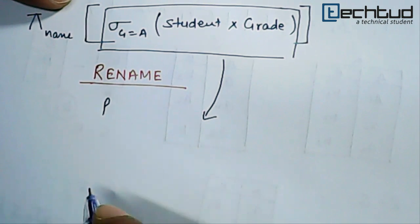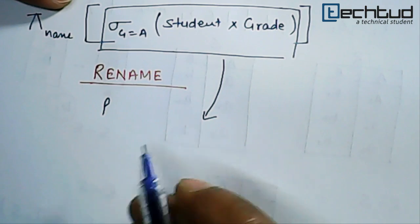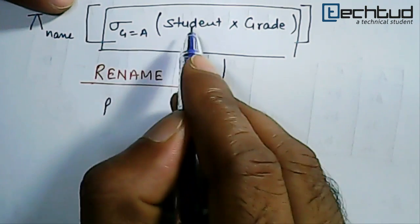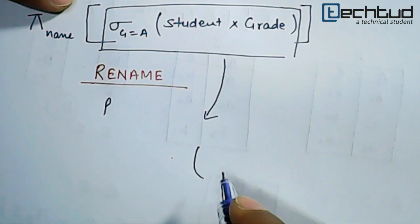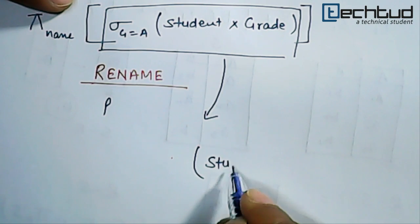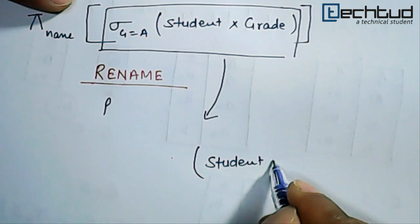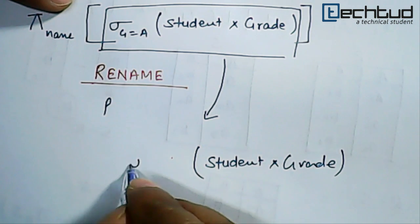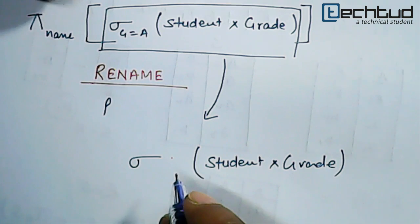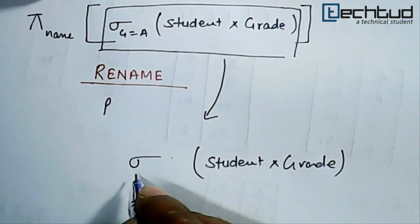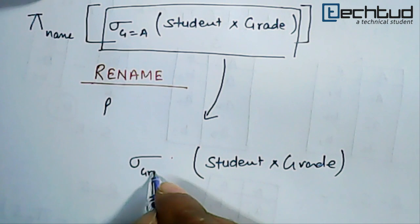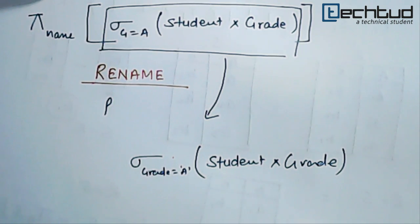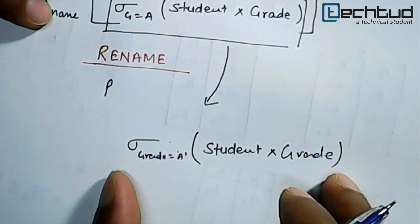Let's say when we come to this stage - we found the cross product of Student and Grade, and then we filtered the rows based on the condition that grade equals A. Then this resultant relation which we have does not have any name.